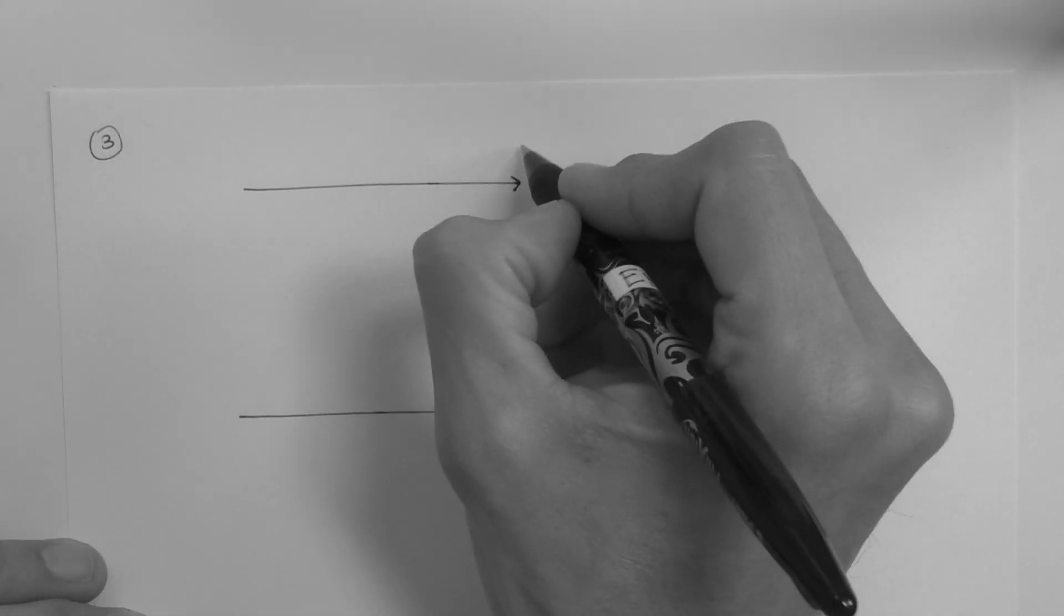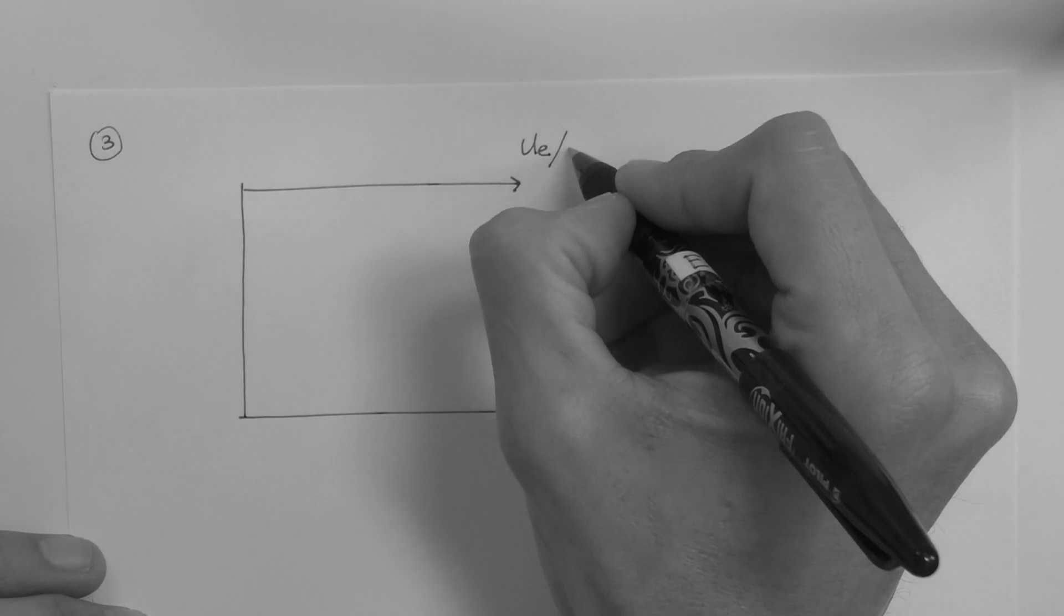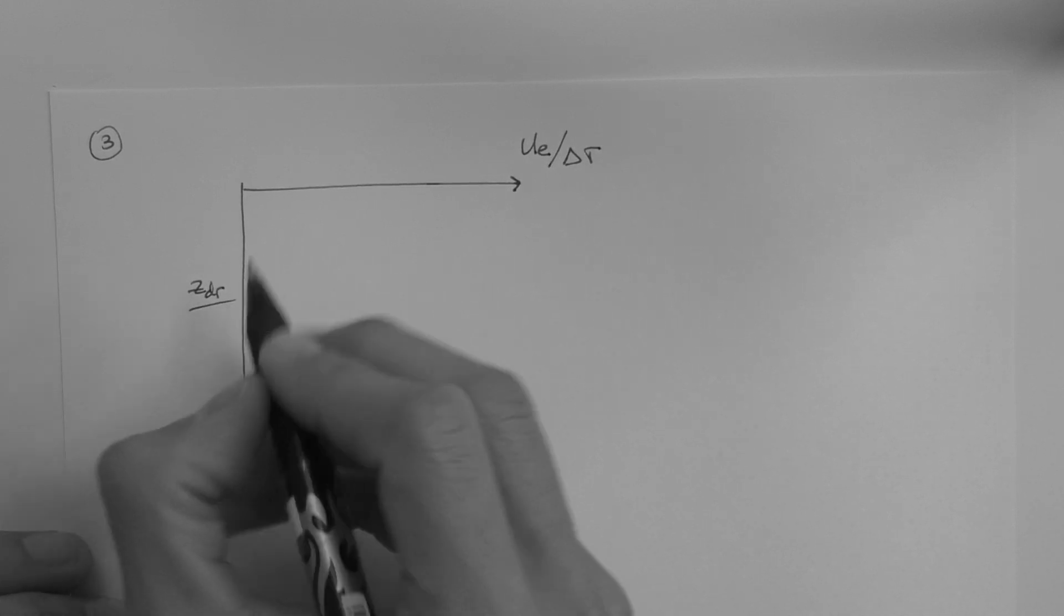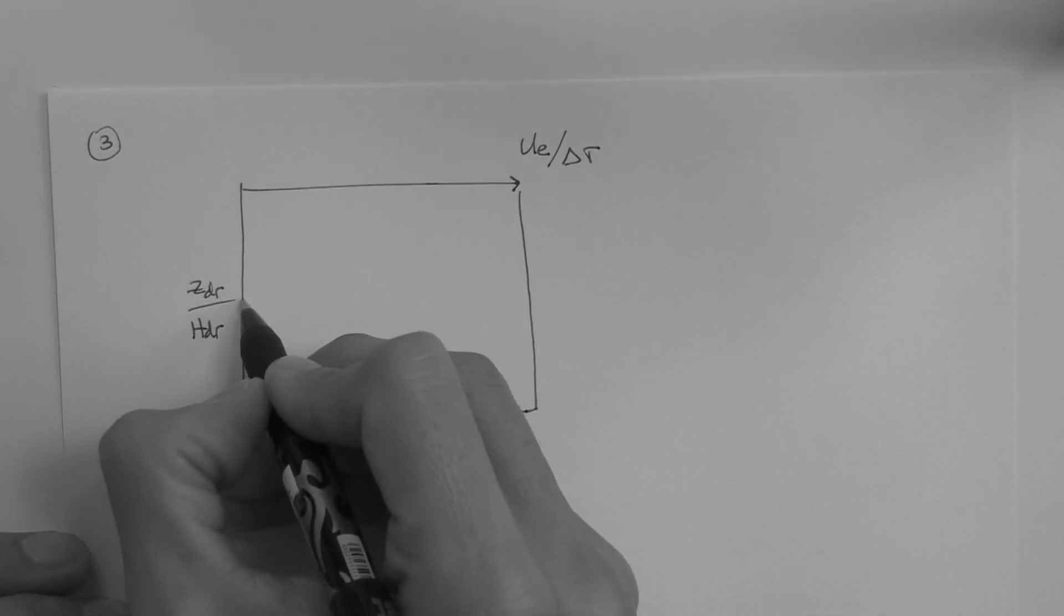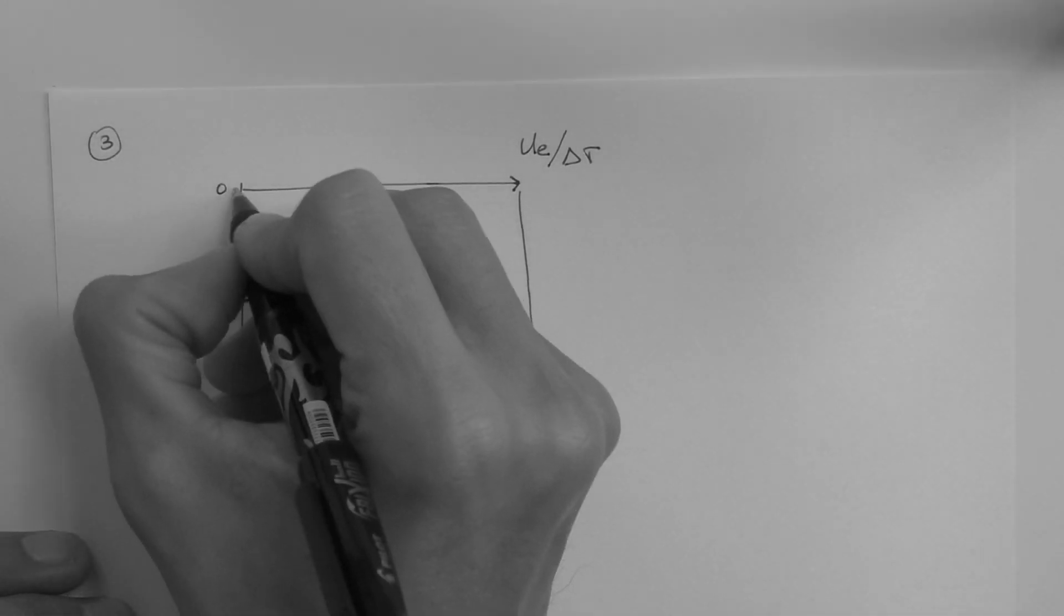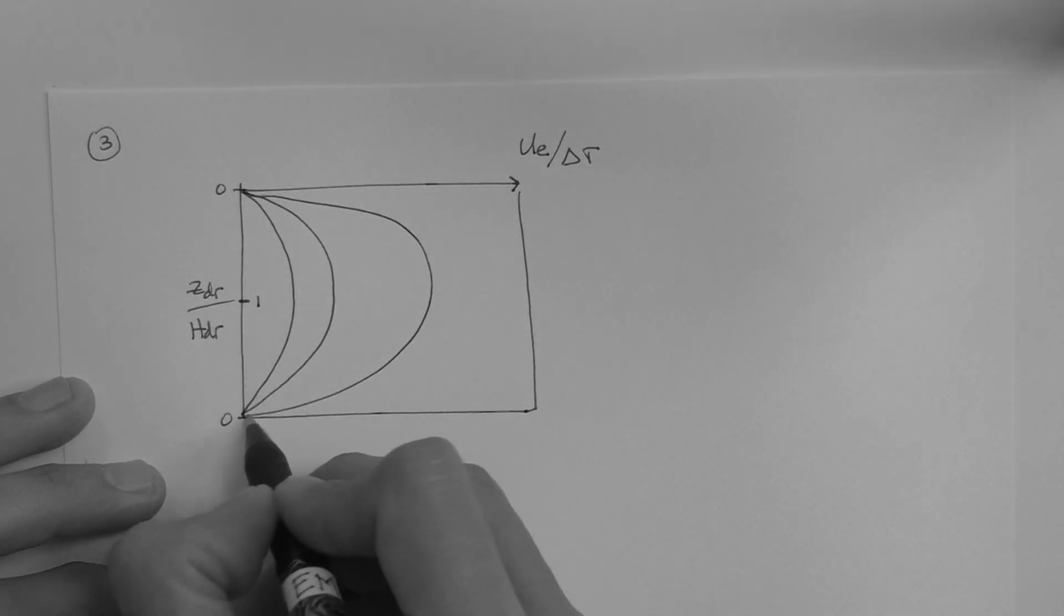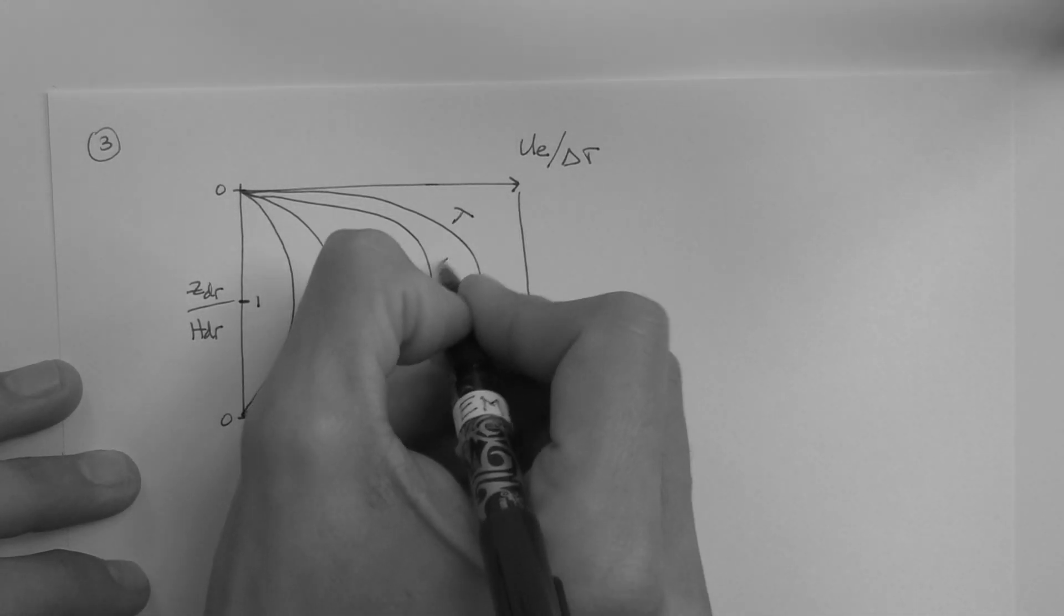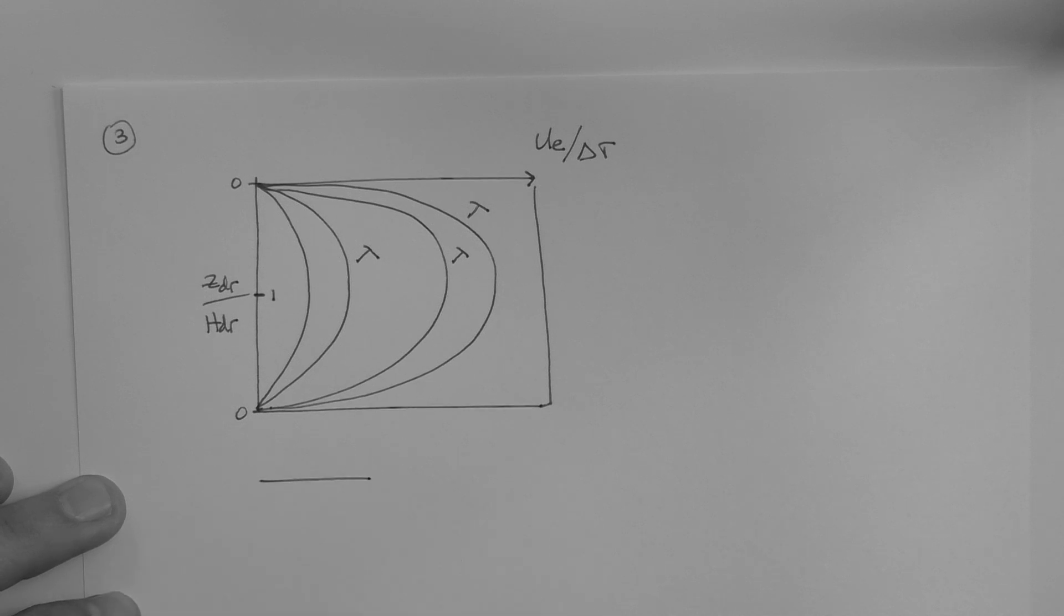Instead of plotting the excess pore pressure versus depth, we plot the excess pore pressure normalized by the load versus a normalized distance. ZDR over HDR. And so, our plot looks like this. Generally, it looks like a box. And the y-axis has a value of 1 here, a value of 0 here, and a value of 0 here. The isochrones, which are similar to the ones that we drew for our non-generic case, are labeled with capital Ts, not lowercase Ts.